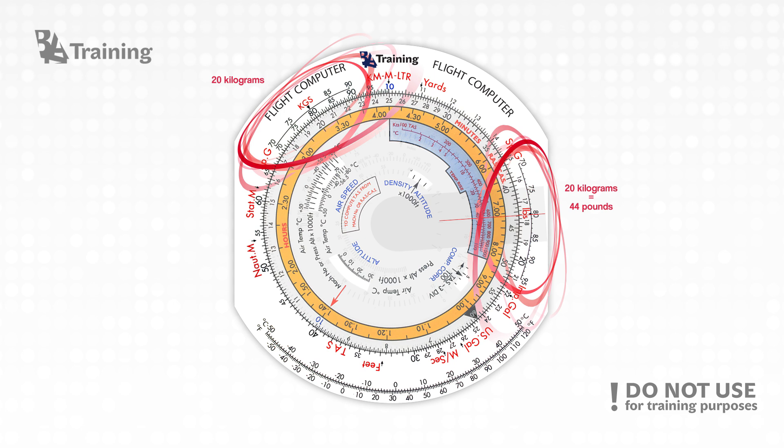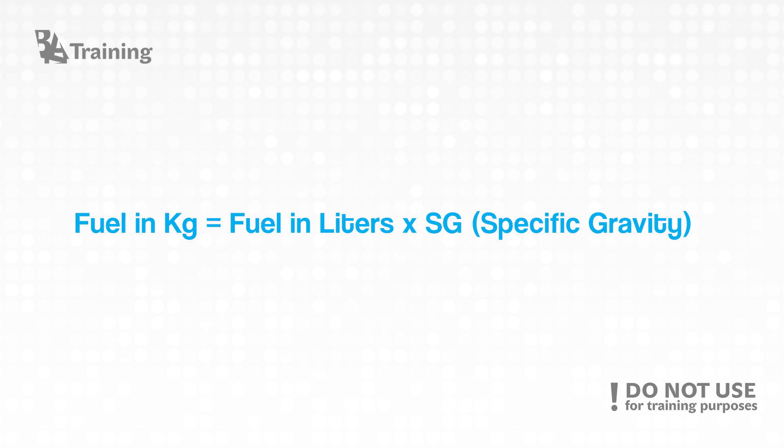Specific gravity is the ratio of density of the substance to the density of water at the specified temperature. Specific gravity information is provided by the refueling services. Fuel in kilograms equals fuel in liters multiplied by specific gravity.